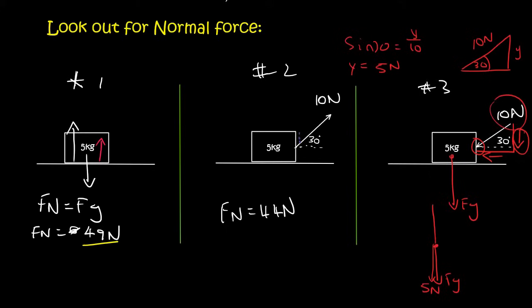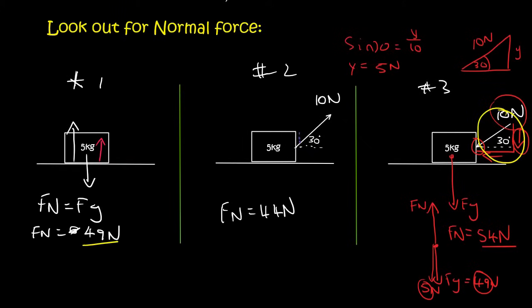So the normal force is going to have to work extra hard now, because it has to keep both forces balanced — gravity (49 newtons) and the downward y-component (5 newtons). The normal force now has to be 54 newtons, because 5 plus 49 is 54. The downward forces must always balance the upward forces. This applied force is pushing the object more into the ground, so the normal force has to work even more.